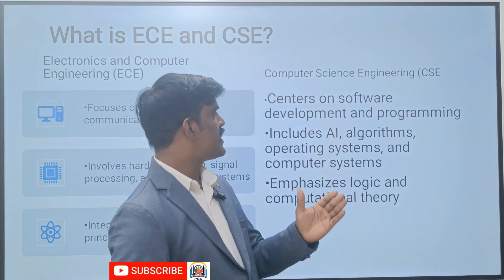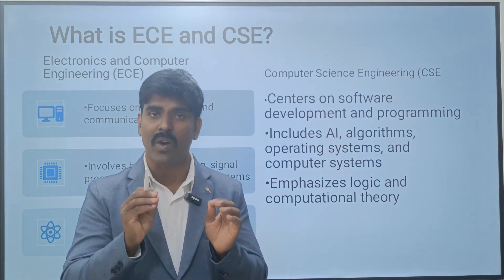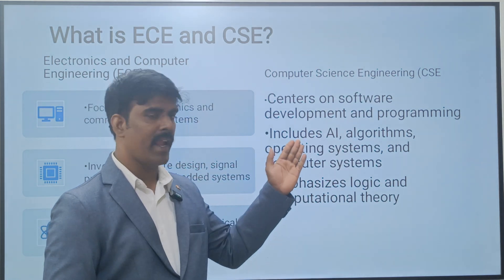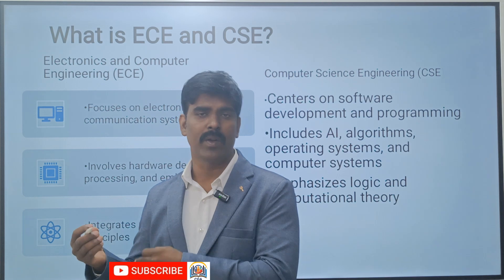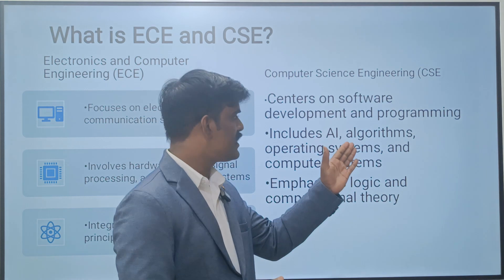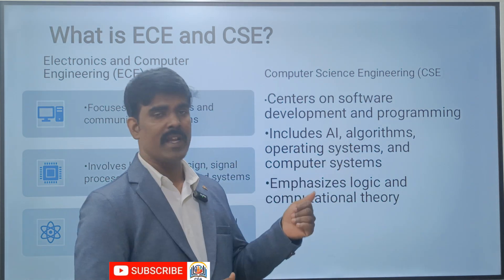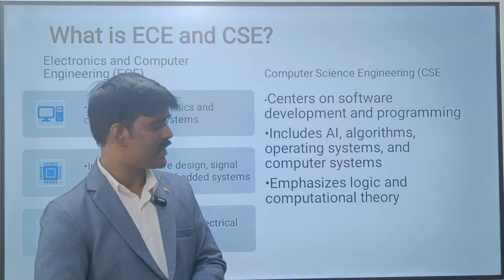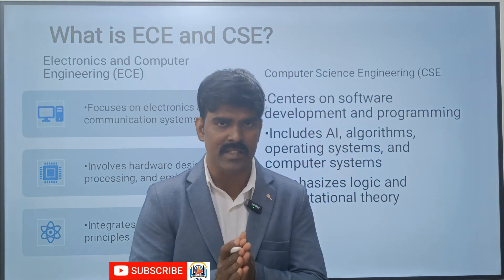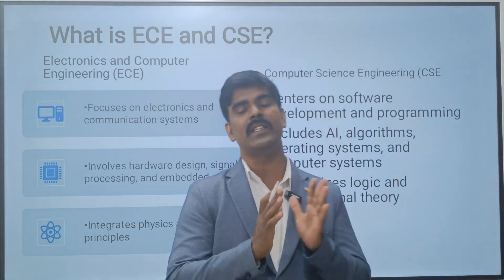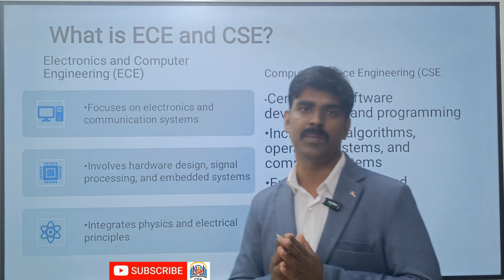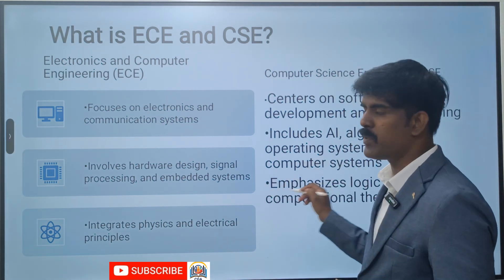Coming to CSE, it mainly focuses on software. The basics are software and programming. CSE covers AI - artificial intelligence and algorithms - operating systems, and computer systems. It mainly emphasizes logic and computation theory. Logical thinking is very important in computer science, so you have to keep practicing coding regularly. That is the main difference between EC and CSE.